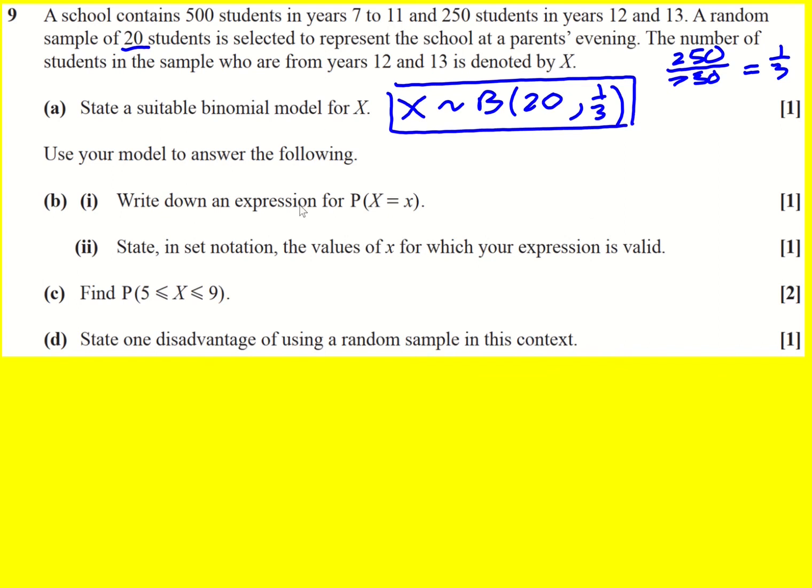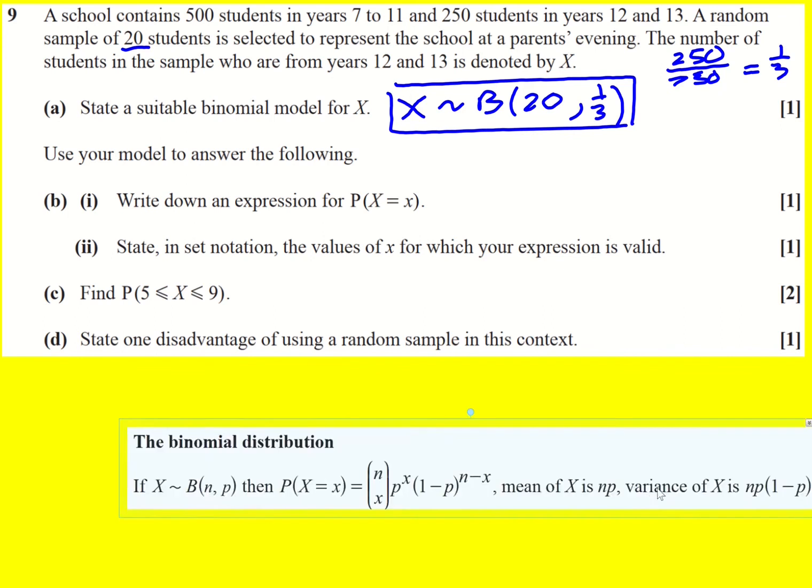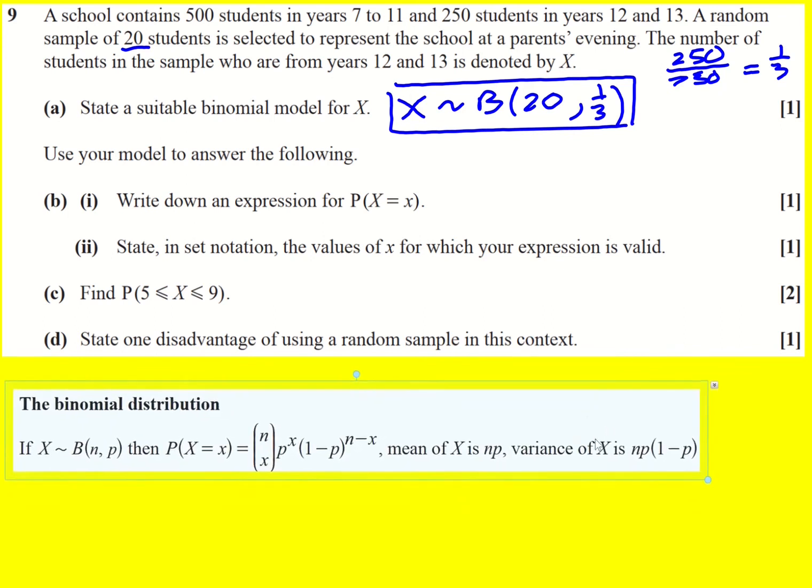Using this model, write down an expression for P(X = x), not just a number but a general formula. Now you are actually given this in the formula book, so you can get away with just subbing in for your n. So we're going to get n which is 20, choose x, p is then the probability of success. That's going to be a third to the x times 1 minus p which is two thirds to the n minus x, that's 20 minus x.